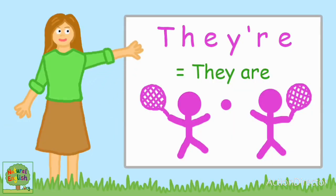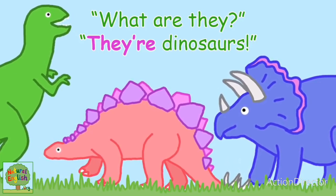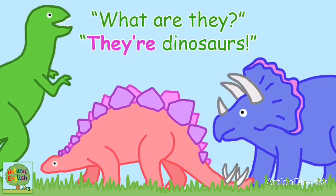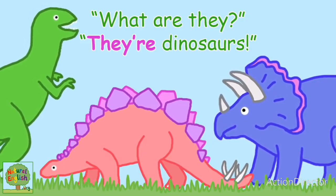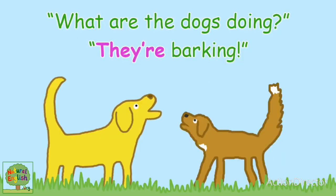They're, spelled T-H-E-Y apostrophe R-E, is short for they are. What are they? They're dinosaurs. Thank you for the flowers — they're beautiful. What are the dogs doing? They're barking.